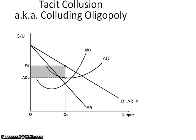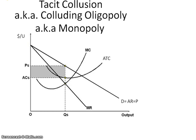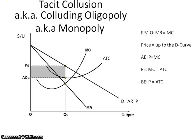When you have an oligopoly that colludes or has tacit collusion, we can also say that it's a monopoly because they're acting as one, and so the graph is identical to the monopoly graph. To review: when talking about profit-maximizing output, the formula is MR equals MC, and ATC is where we can find that.